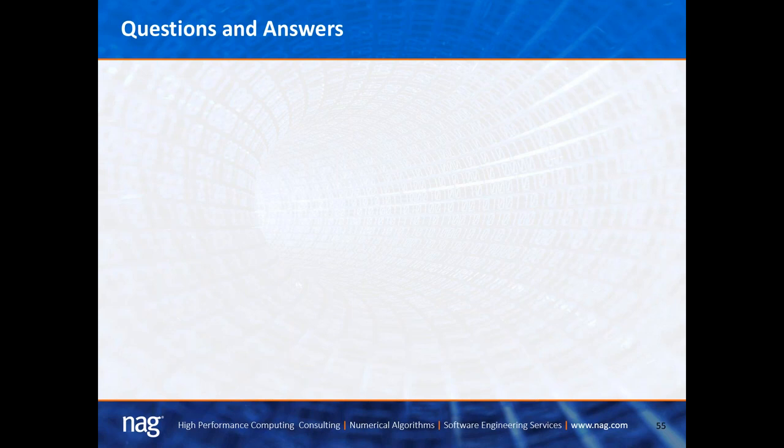The next question: how compatible is the NAG compiler with Intel Fortran? There is no guarantee, but I can't think of a counterexample of incompatibility. Regarding character string lengths, the Intel compiler uses 64-bit integers for character string lengths, and I'm not sure if the NAG compiler does or not — I would not make any claims on that. On Linux, no claims can be made, but on Windows, if you compile a program using the Intel compiler and make a DLL, you can call that from the NAG Fortran compiler, though you can't call static libraries on Windows.